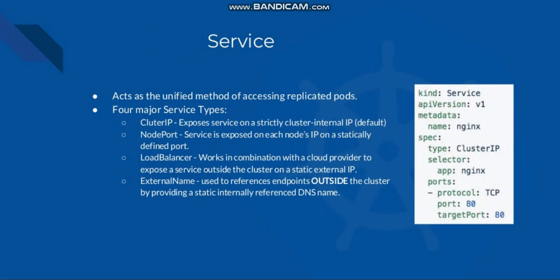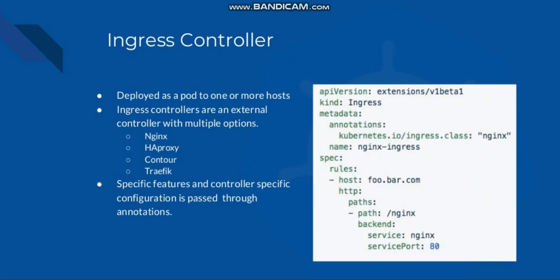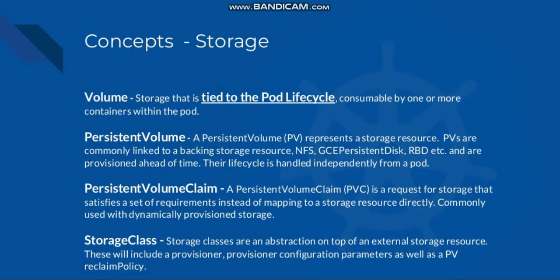You can see the YAML file for the service on the right side. Ingress controller is deployed as a pod to one or more hosts. An ingress controller is an external controller with multiple options — such as Nginx, HAProxy, Contour, and Traffic. Specific features and controller-specific configurations are passed through annotations. You can see the YAML file on the right side.